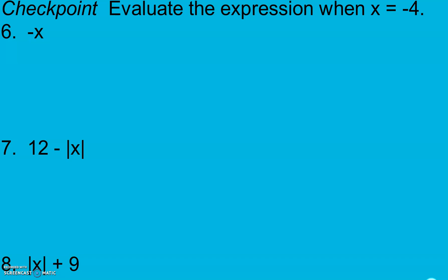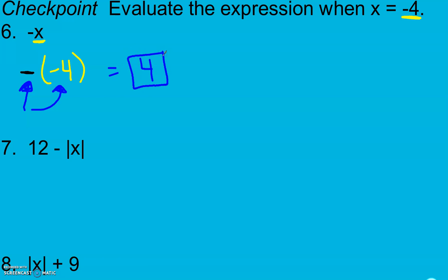Pause and give these a try — we're evaluating expressions when x equals negative 4. For number 6, everywhere I see an x I make it negative 4. I have minus x — the opposite of x. The opposite of negative 4 is positive 4. For number 7, I have 12 minus the absolute value of x, which is negative 4. Absolute value is a grouping symbol, so we do that first. Absolute value of negative 4 is 4 units away from 0. Bringing everything else down, I have 12 minus 4, and we get 8.